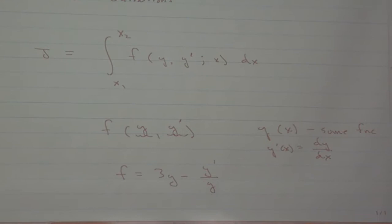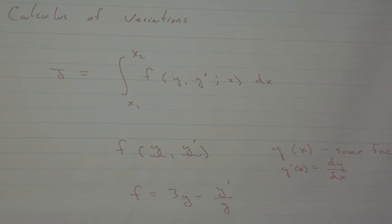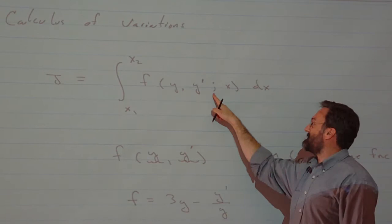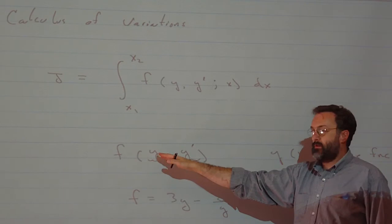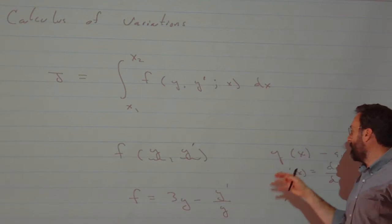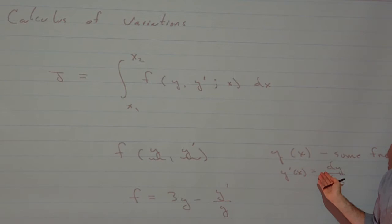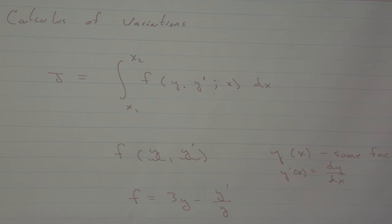Does that make sense? It depends on y and y prime. I am going to explain now what that semicolon means. F, which when I wrote it this way, looks like it depends on y and y prime. And I am now telling you that y is a function of x and so y prime means its derivative. So in a sense, f ultimately depends on x, because f depends on y and y depends on x. And f depends on y prime and y prime depends on x.